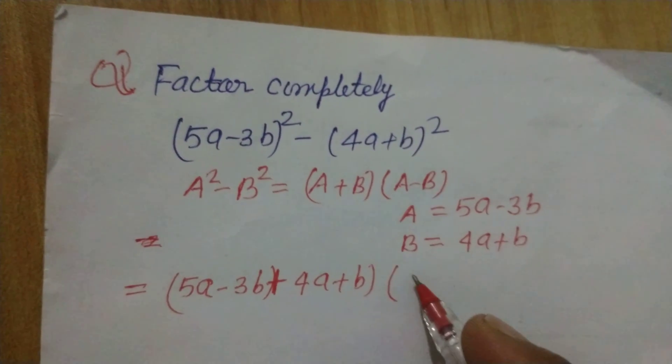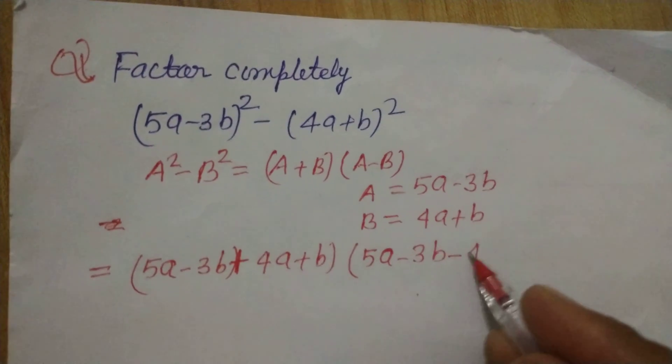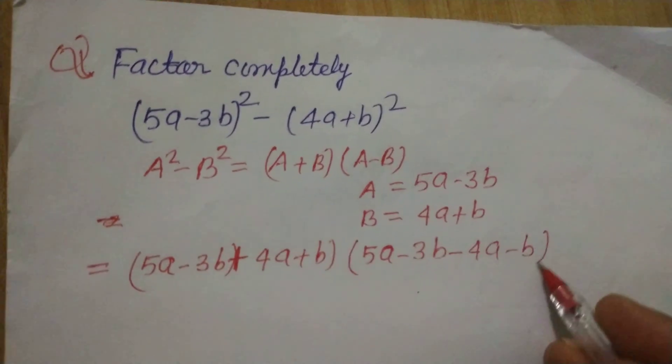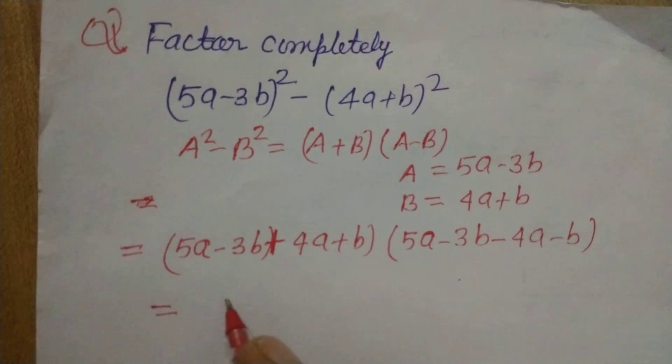Now in the second bracket we take 5a minus 3b minus 4a minus b. So 4a plus 5a, this is 9a.